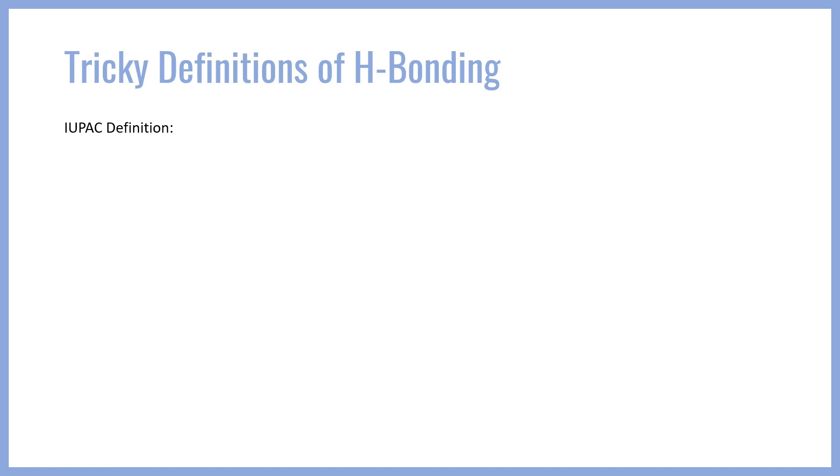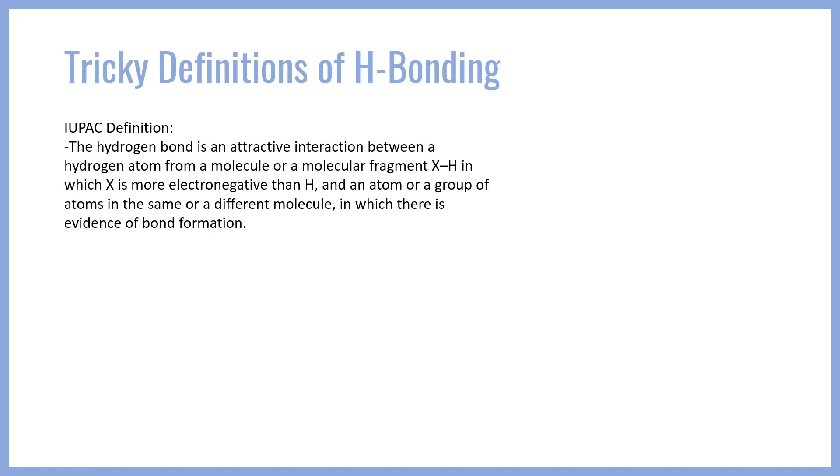The IUPAC definition, or the International Union for Pure and Applied Chemistry, the way they define a hydrogen bond: The hydrogen bond is an attractive interaction between a hydrogen atom from a molecule or a molecular fragment, XH, in which X is more electronegative than H, and an atom or a group of atoms in the same or a different molecule in which there's evidence of a bond formation.